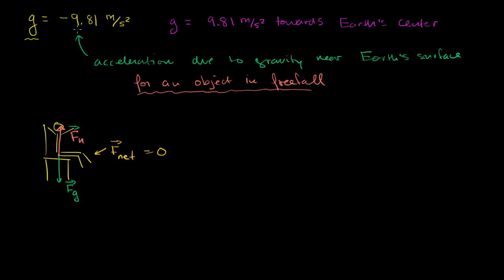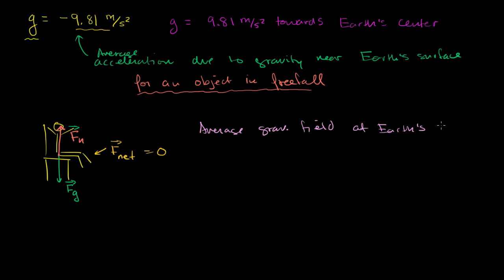Because 9.81 meters per second squared still seems relevant to my situation even though I'm not an object in free fall, another way to interpret this is not just as the acceleration due to gravity near Earth's surface for an object in free fall. A more general way to interpret it is as the gravitational field — or Earth's gravitational field. It actually changes slightly throughout the surface of the Earth, but we can view it as the average gravitational field at Earth's surface.